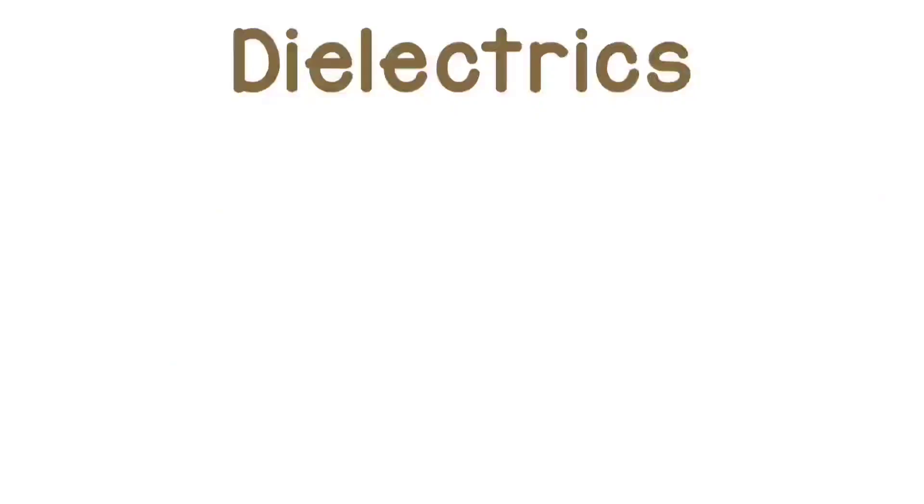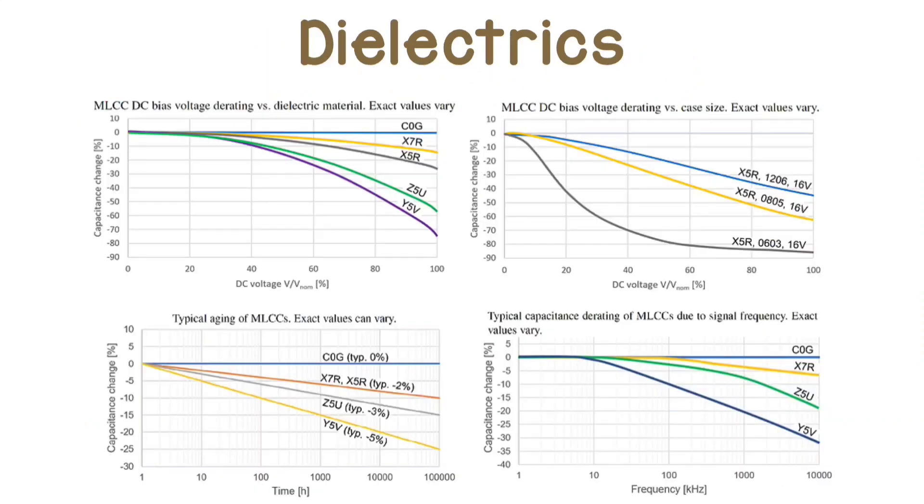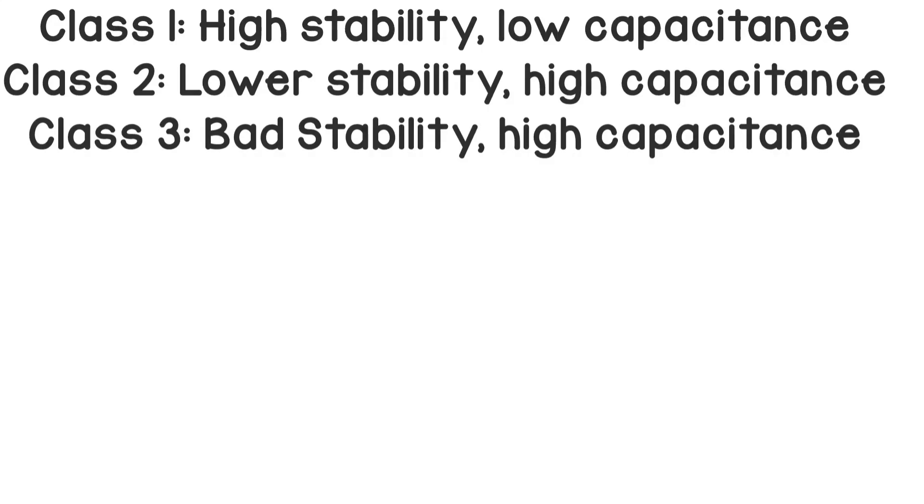The last most important parameter is the dielectric of a capacitor. For ceramic capacitors we have three classes of dielectrics, and we represent them with a three-digit code. Class 1 dielectrics are for higher reliability and high stability over temperature. Class 2 is instead less stable over temperature, although still pretty adequate, but can lead to higher capacitance due to higher dielectric constant. Class 3 is basically the lowest tier, with the highest capacitance change with temperature.